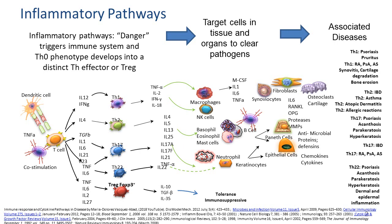Finally, we have the tolerance or immunosuppressive profile of the T regulatory cells, FOXP3. These profiles are not linear — they would seemingly be independent. But now we know there is a lot of crosstalk and communication between these different phenotypic expressions of the different TH cells. They can occur either in a normal situation dealing with danger, or they can be associated with very specific diseases.